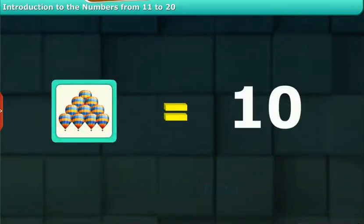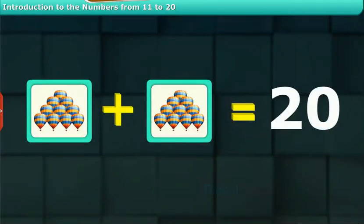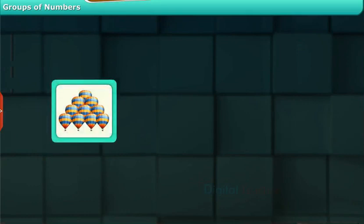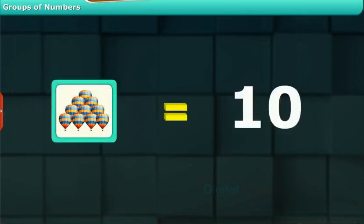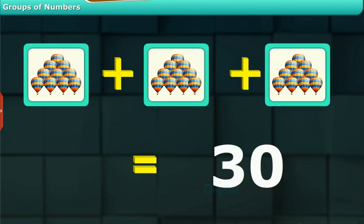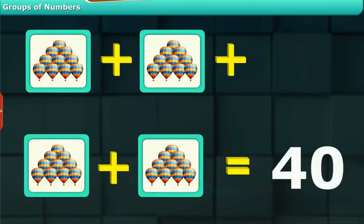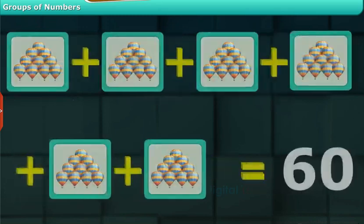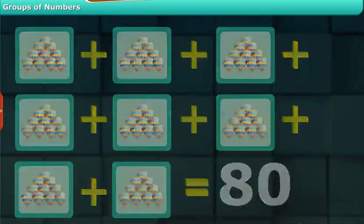We can count the number 20 easily by groups of tens — in this number we have two 10-groups. Here, each set contains 10 parachutes. We can count numbers using the number of sets. The second row contains two sets, hence the number of parachutes is 20. The third row contains 30 parachutes since it has three sets, then follow 40, 50, 60, 70, 80, and 90.